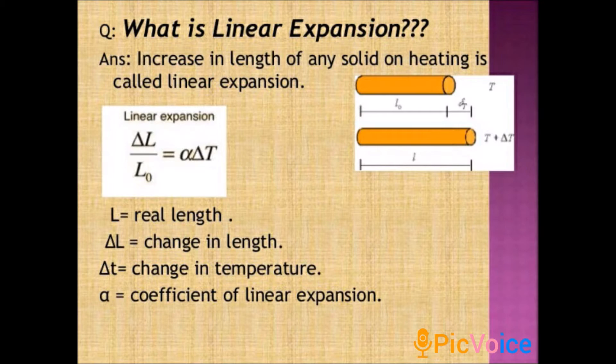What is called linear expansion? The increase in length of any solid object while heating is called linear expansion. You can see the difference between the two pictures — the second rod is expanded due to heating. The equation relates the change in length to the change in temperature of the body.